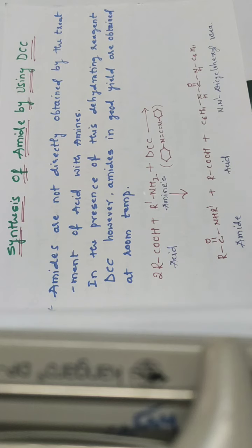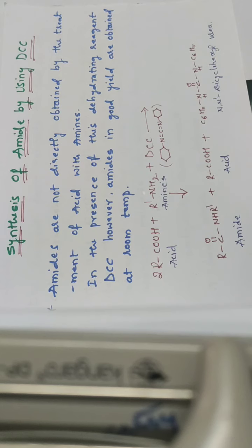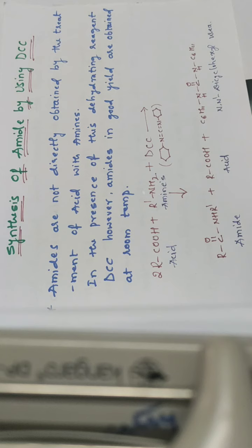We all know the amide molecule — that is nothing but the C double bond O, NH2 structure, which we call amides. For the formation of amides we need the reactant molecules carboxylic acid and amines. But by direct reaction between carboxylic acid and amines we will not get the product amide, so we need a reagent like DCC, which helps to couple the carboxylic acid and amine.